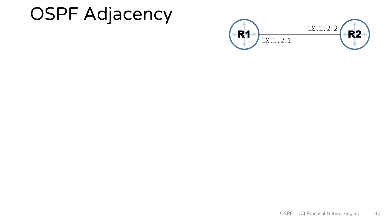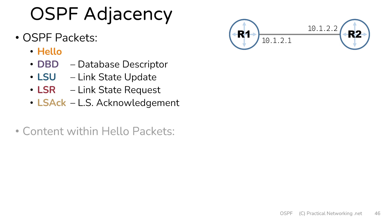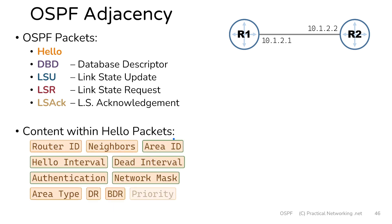Back in Lesson 1, we talked through the different packets that OSPF uses in all its conversations. Then back in Lesson 3, we showed you everything inside a hello packet, and specifically we outlined which parts of a hello packet must match for two routers to become OSPF neighbors. If any of that is unfamiliar to you, I'd highly recommend starting with those two lessons.